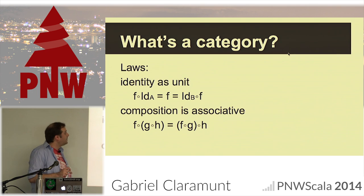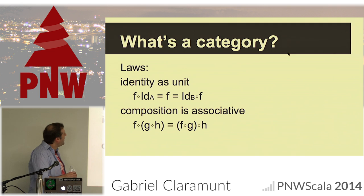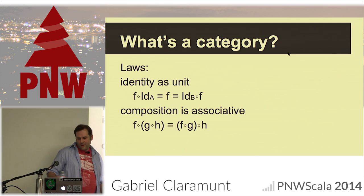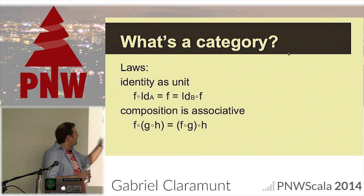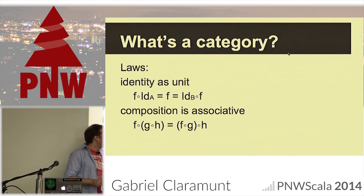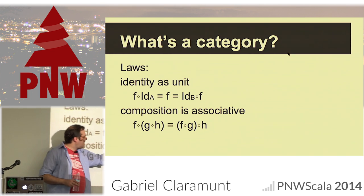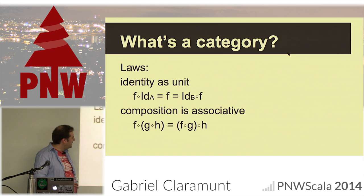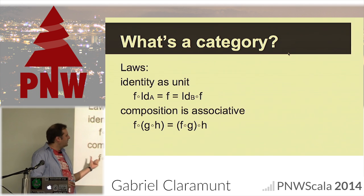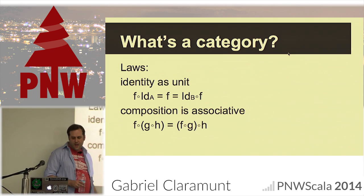There are a couple of laws we have to abide by. These moral laws can be deduced from the definition. Basically, it doesn't matter where you compose the identity — it always does nothing. F composed with identity gives you F, and identity composed with F also gives you F. And composition is associative — it doesn't matter if you compose one side first or the other; it's the same.